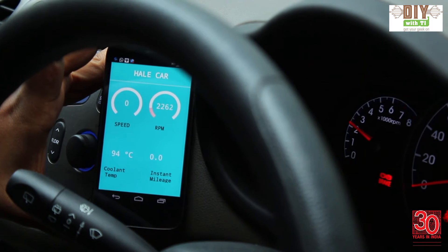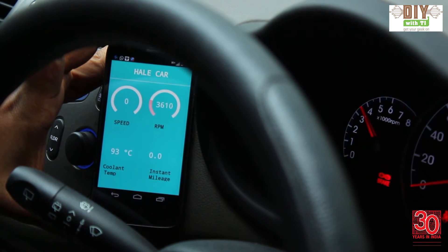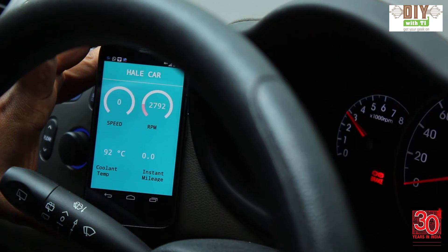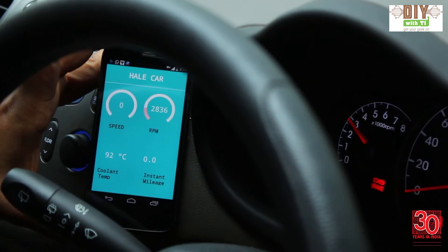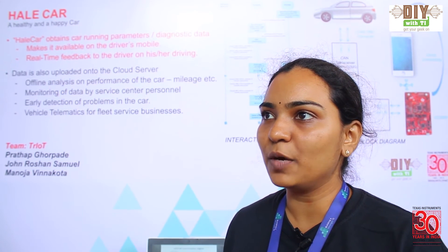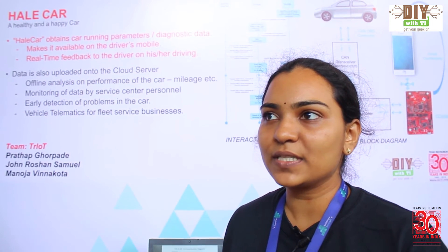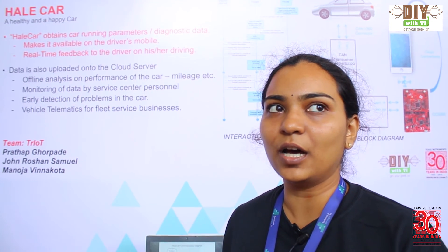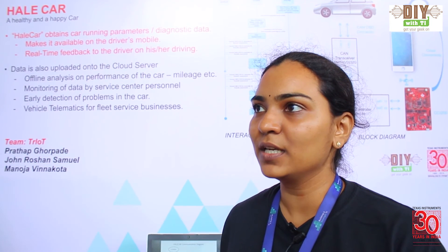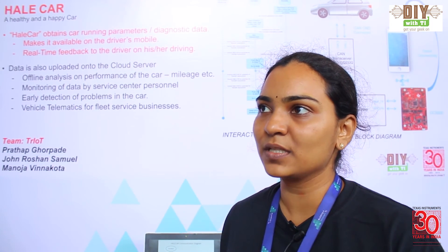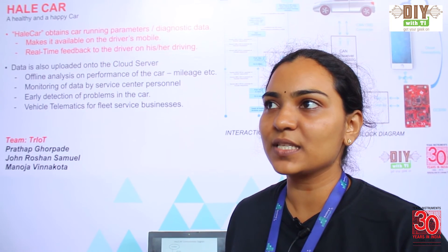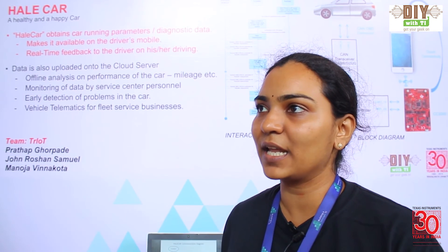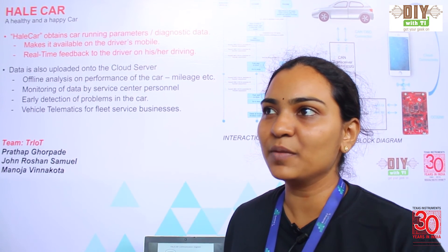Our DIY project, Hail Car, is a car diagnostic tool that connects with the OBD port in a car, reads the car's running parameters, and displays them on the mobile for the user in real-time. This provides real-time feedback to help improve driving skills. The data is also uploaded onto a cloud server so service center personnel can monitor it and detect problems early. Fleet service businesses can also use it to monitor driver behavior and prevent unsafe driving.